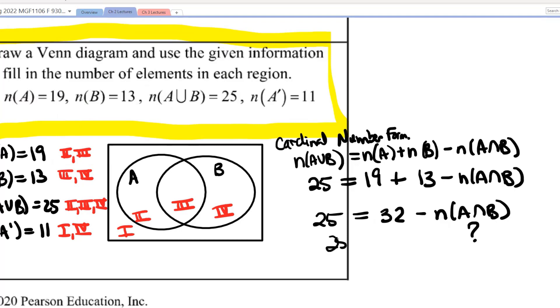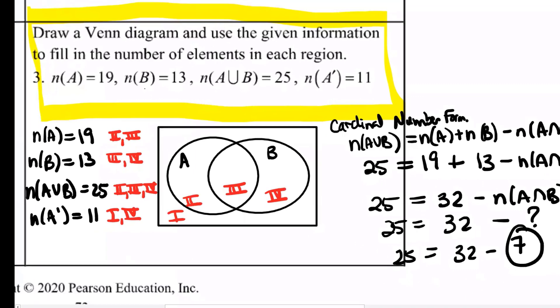What number do we have to subtract from 32 to get 25? 25 equals 32 minus what? 7. 32 minus 7 would give you 25, wouldn't it? So what that tells me is that A intersect B had to have seven elements in it.